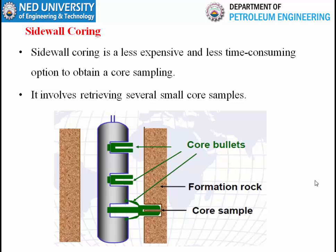In conventional coring, the core is collected by drilling — we replace our drill bit with a coring bit and a core barrel. Generally we need prior knowledge of the rock. But if we haven't planned conventional coring and after analyzing mud logs and well logs we identify a potential hydrocarbon-bearing zone, we can plan sidewall coring. Sidewall coring is planned after analyzing well logs and mud logs.